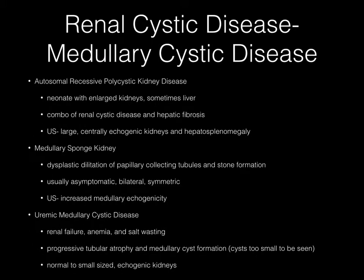Autosomal recessive polycystic kidney disease typically presents in the neonate with enlarged kidneys and sometimes hepatic involvement. The combination of renal cystic disease and hepatic fibrosis is typical, and ultrasound demonstrates large, centrally echogenic kidneys and hepatosplenomegaly. Medullary sponge kidney involves dysplastic dilatation of the papillary collecting tubules with subsequent stone formation — usually asymptomatic, bilateral, and symmetric — with increased medullary echogenicity on ultrasound. Uremic medullary cystic disease presents with renal failure, anemia, and salt wasting, with progressive tubular atrophy and medullary cyst formation, although cysts are usually too small to be seen on imaging.